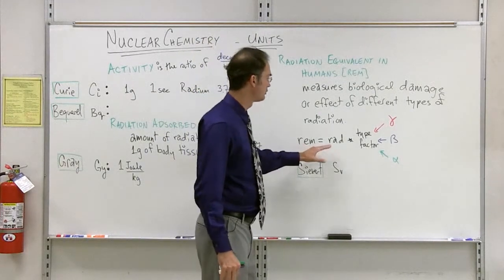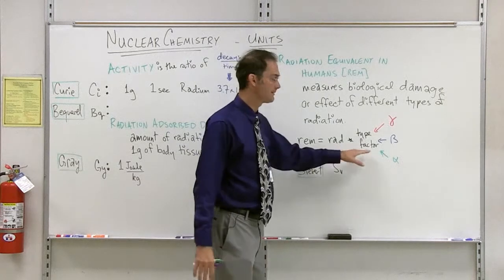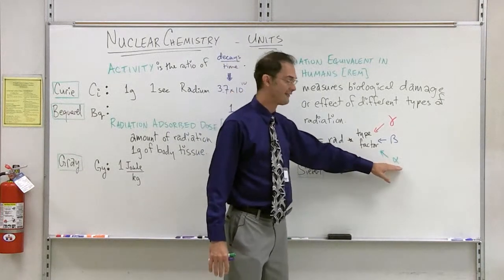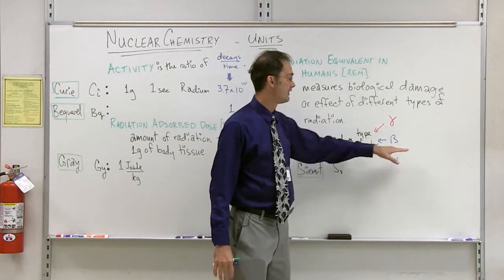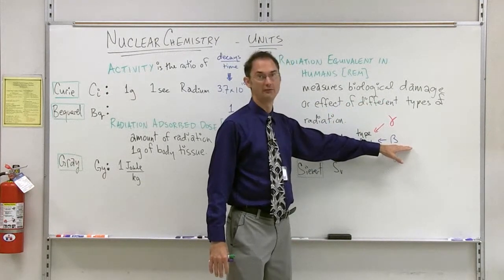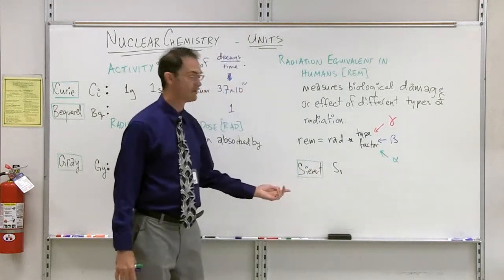REMs, then, are equal to the rads, which have to do simply with the amount of energy, multiplied by a type factor. That is to say, one joule of alpha particles will not have the damage or effect that one joule of beta particles will. And finally, the unit of the REM is the Sievert.